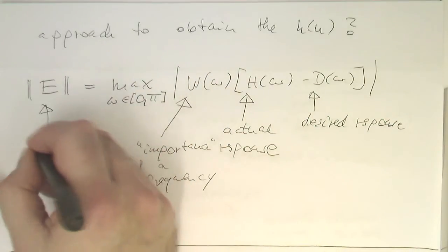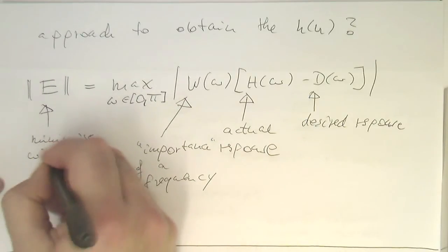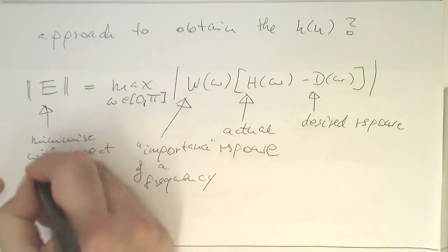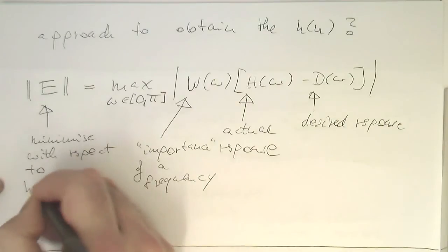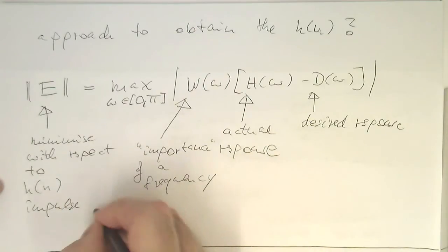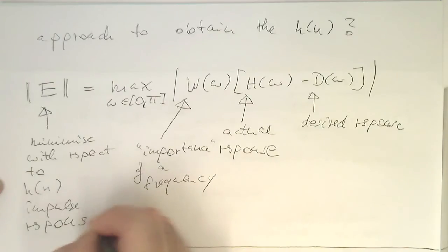This one needs to be minimized with respect to h of n, the impulse response. This algorithm is quite a complex beast, and I'm not deriving this, but we are just going to use it because there are design commands in MATLAB and Octave available.